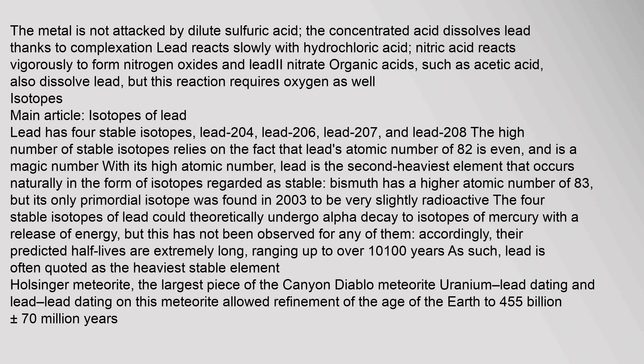The high number of stable isotopes relies on the fact that lead's atomic number of 82 is even and is a magic number. With its high atomic number, lead is the second heaviest element that occurs naturally in the form of isotopes regarded as stable — bismuth has a higher atomic number of 83, but its only primordial isotope was found in 2003 to be very slightly radioactive. The four stable isotopes of lead could theoretically undergo alpha decay to isotopes of mercury, but this has not been observed. Their predicted half-lives are extremely long, ranging up to over 10^100 years. Uranium-lead dating on the Holsinger meteorite, the largest piece of the Canyon Diablo meteorite, allowed refinement of the age of the Earth to 4.55 billion plus or minus 70 million years.